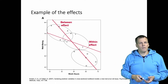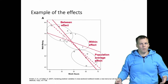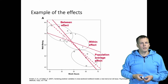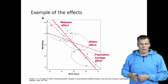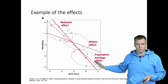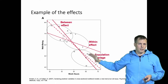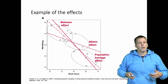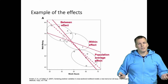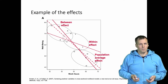The population average effect is simply running a regression line through the data ignoring all clustering effects. In this case it is closer to the between effect, and that line really doesn't have any clear causal interpretation.